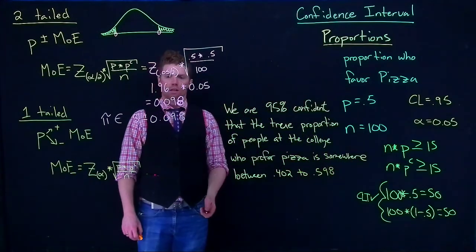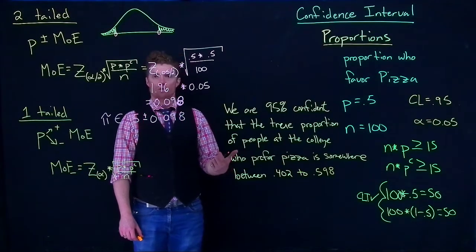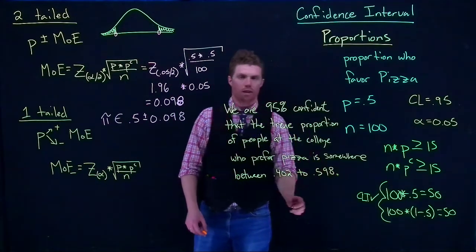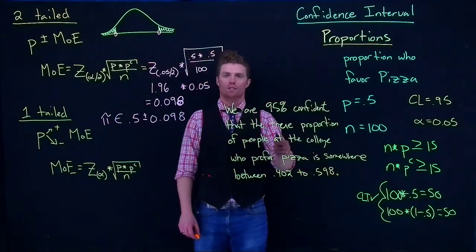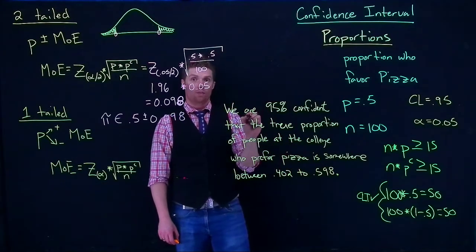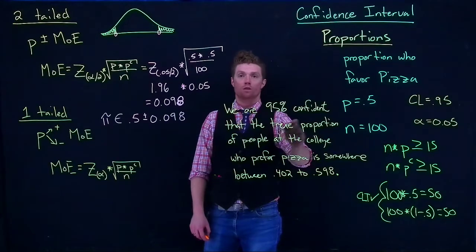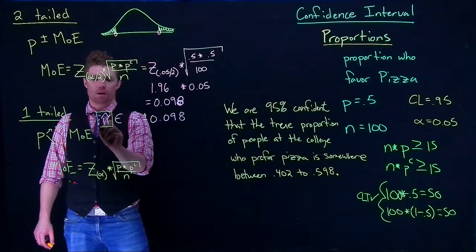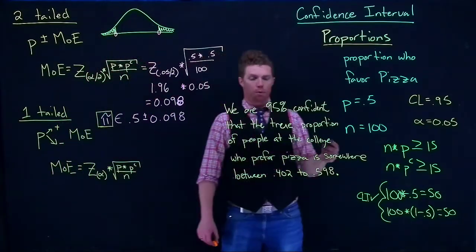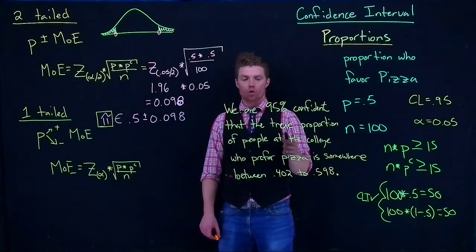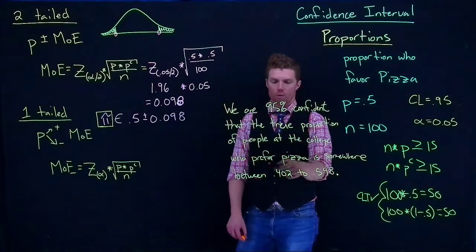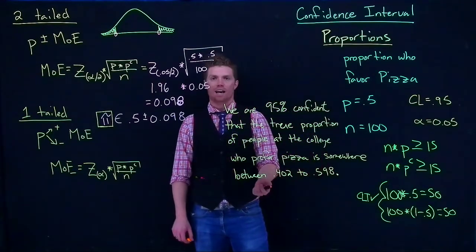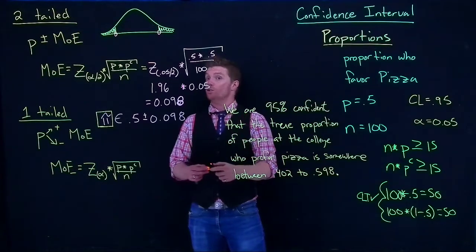So we know that the true proportion is somewhere between those two values. As we're writing this, there are a few things I wanted to point out. I use this word true proportion very carefully. I wanted to make sure that we were making some inference about pi, which is the true proportion of people at the college who prefer this pizza, and it's somewhere between our 0.402 to 0.598. That's how we do it if we want to do a two-tailed example.